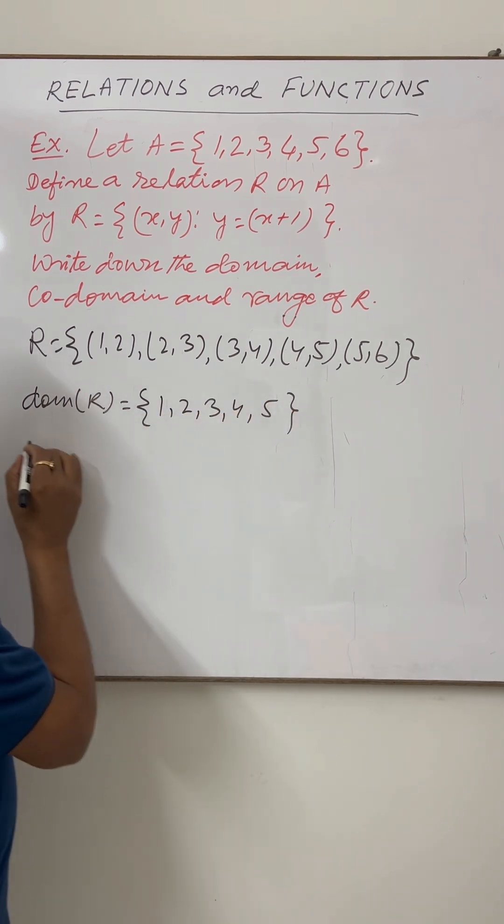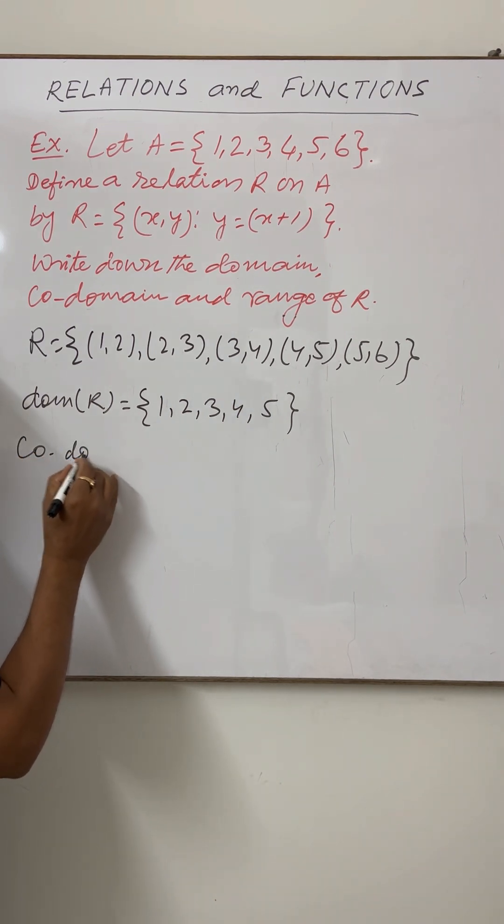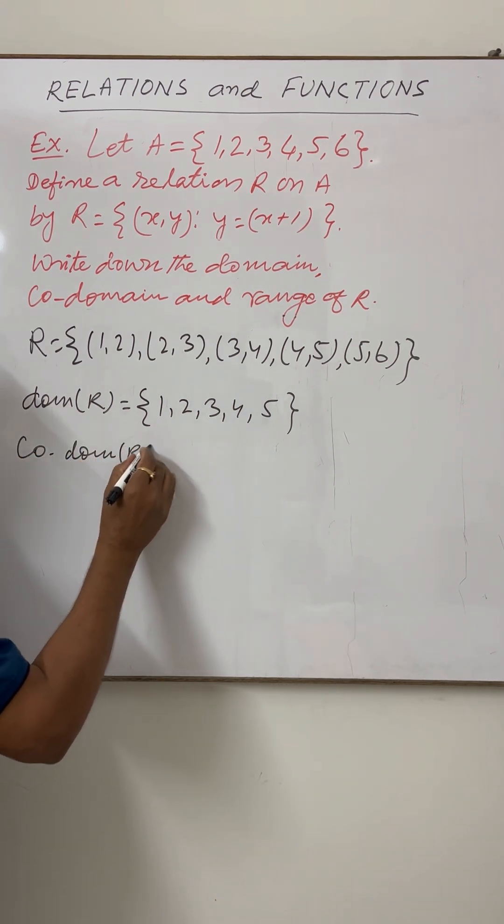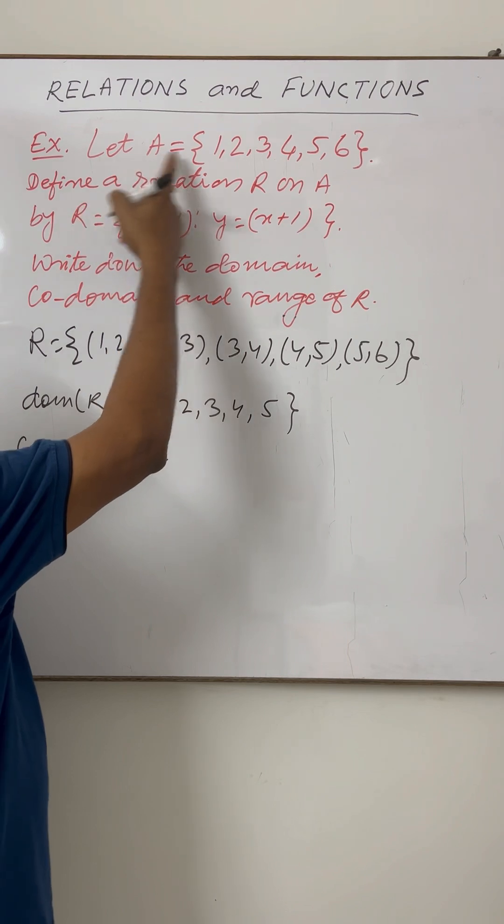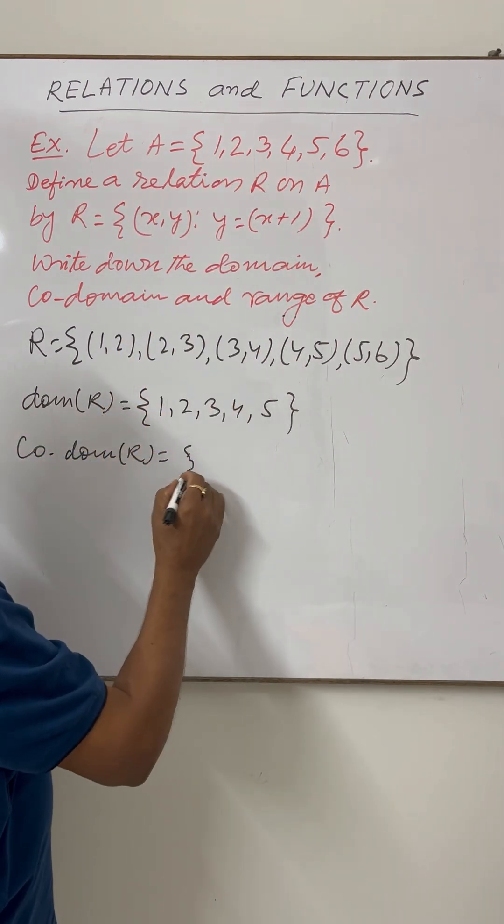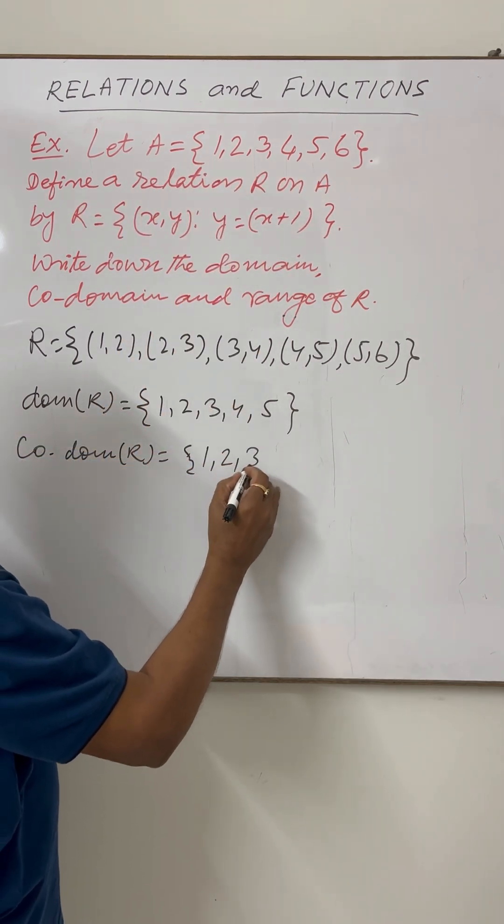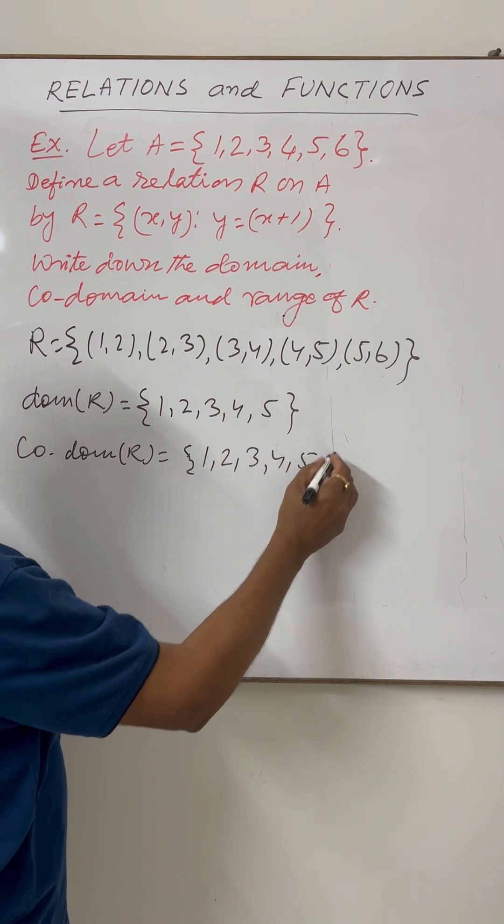5. And the co-domain of this relation R, that is this set A. So elements are 1, 2, 3, 4, 5 and 6.